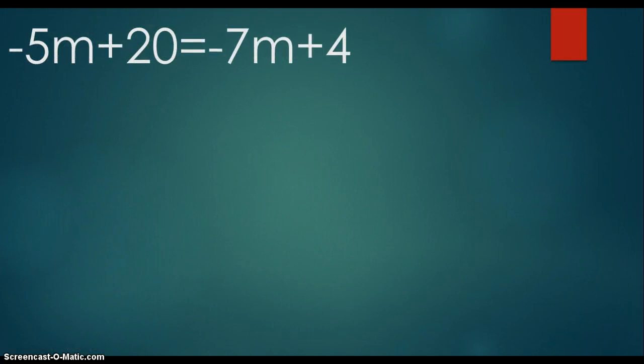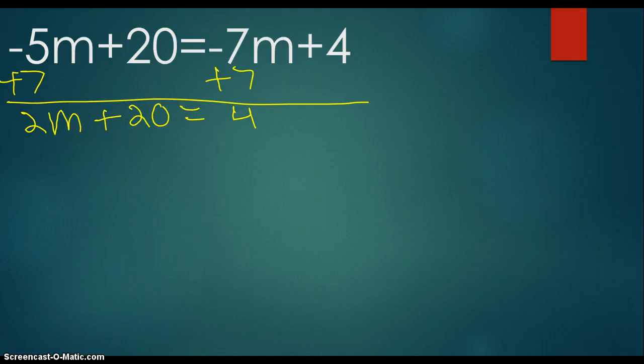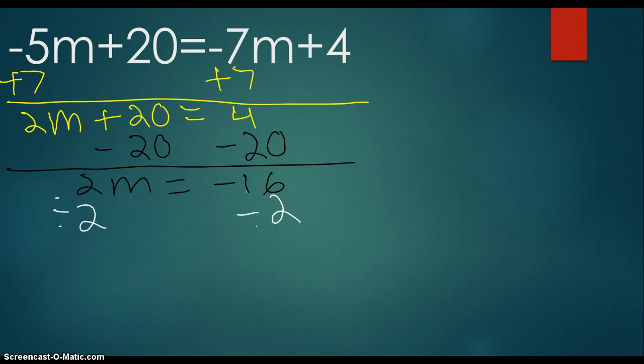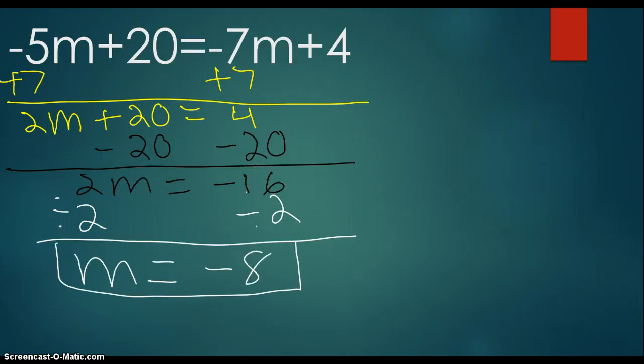So my first problem was -5m+20=-7m+4. The first thing I did was add 7 to both sides so I can get my variable on one side only. I would get 2m+20=4. After that I would minus 20 on both sides to have that 2m by itself and I would get 2m=-16. After that I would divide by 2 so I can get just that variable and I got m=-8 as my final answer.